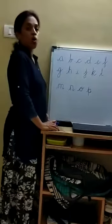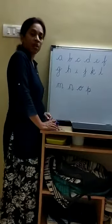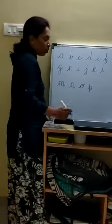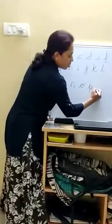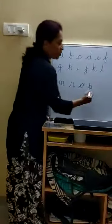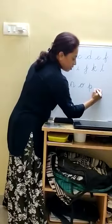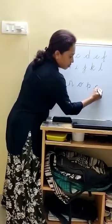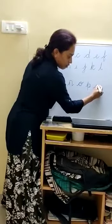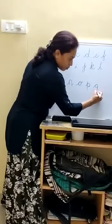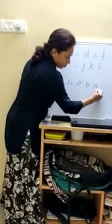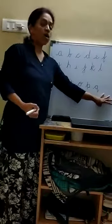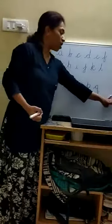Next is Q. Name of the letter is Q. Sound of the letter is Q. Qua. How to write? In between the third, second, and fourth lines. Starting from the third line, go to the second line, come back with a curve, go to the second line once again, come back to the third line, and outside, must take the tail. Qua. Queen. Qua. Qua. Quilt.